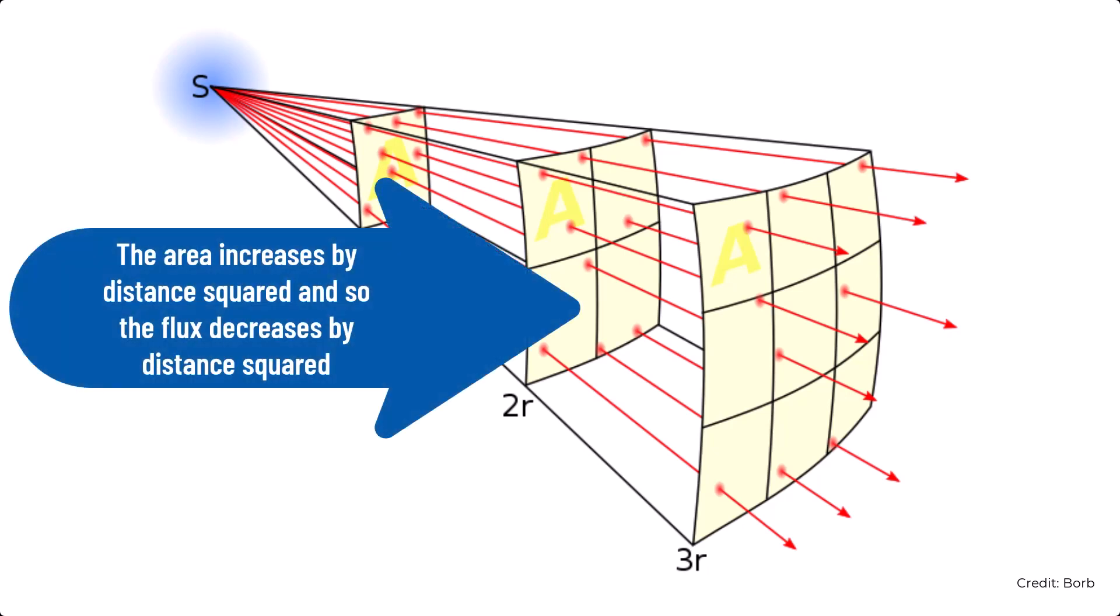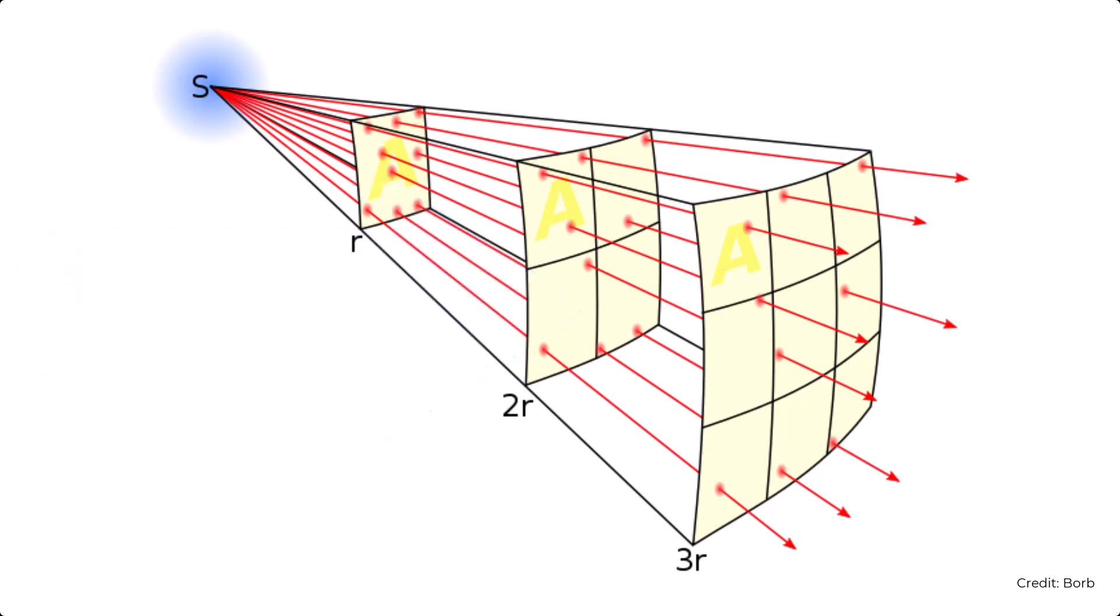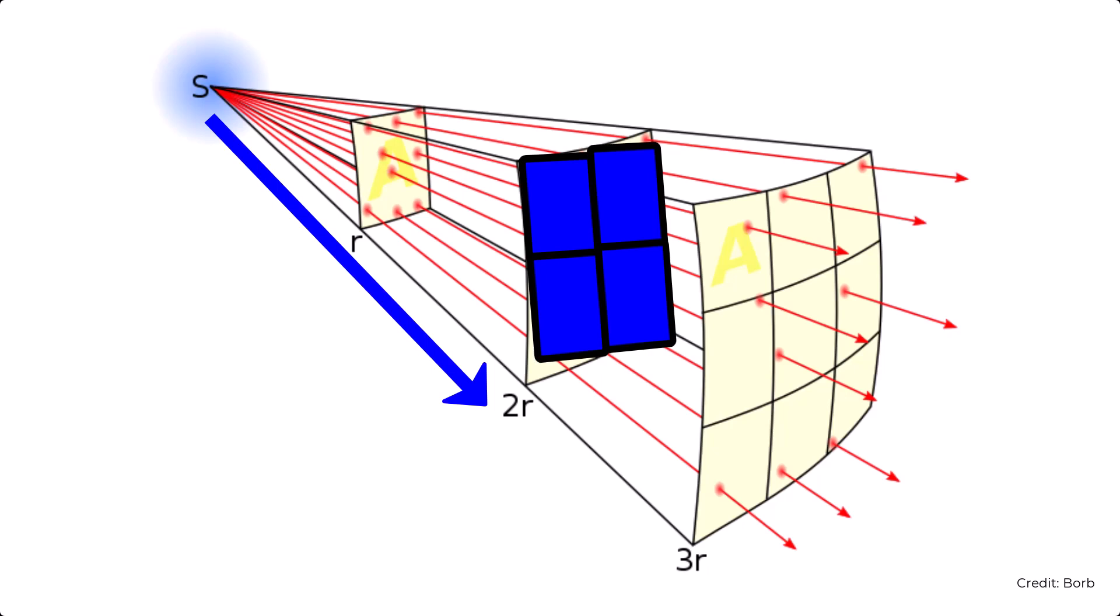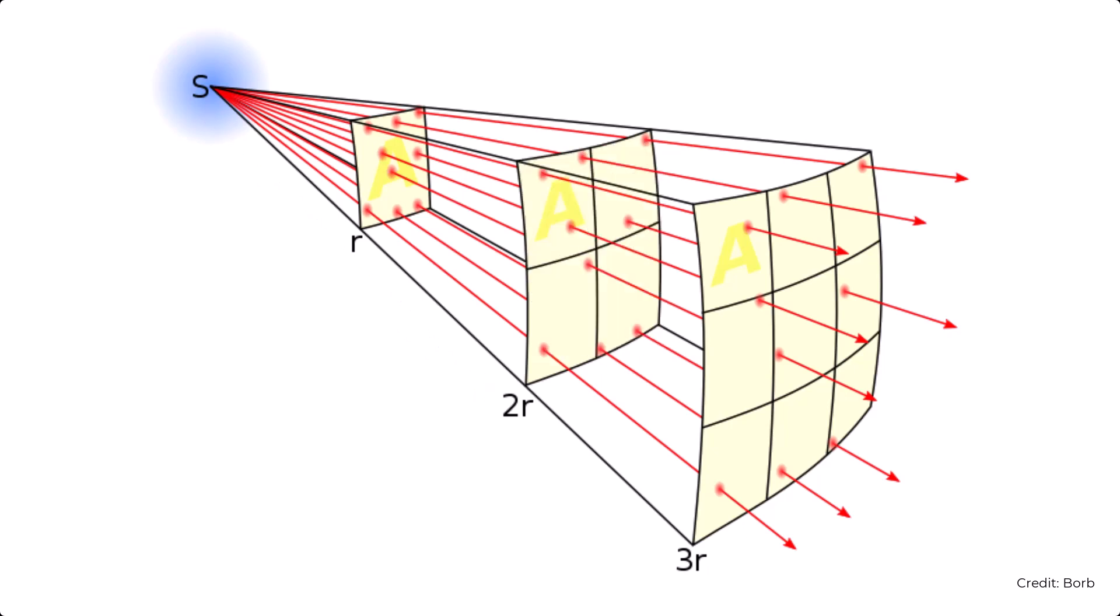Much like if you have a candle, the light gets dimmer the further away you are from the candle. Inverse square describes how if you are say two meters from the candle, the light is four times dimmer than if you were just one meter from the candle. This is because the ratio of two squared divided by one squared is four, and this describes how the intensity of light decreases through space.